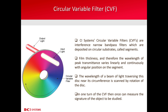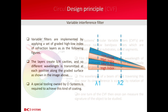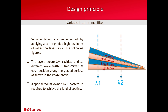Therefore, in one turn of the CVF, one can measure the signature of an object to be studied. The design principles of a variable interference filter is that they are implemented by applying a set of graded high and low index of refraction layers, as in the figure attached. The layers create one-quarter wavelength cavities,